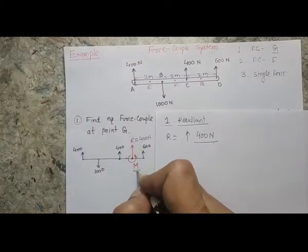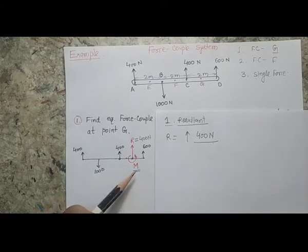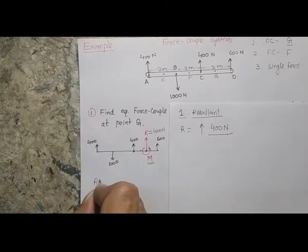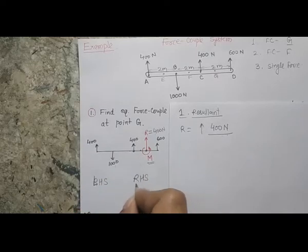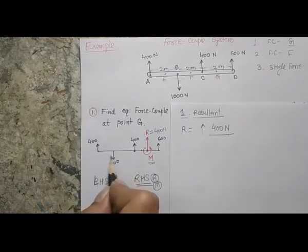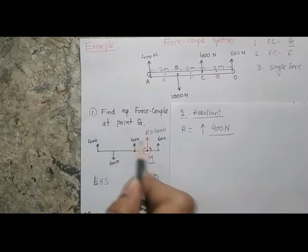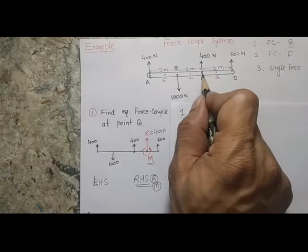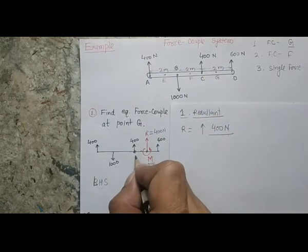Now I need to find the moment M. To do this, I write two equations — the left-hand side covering the effect of the original four forces, and the right-hand side covering the effect of the resultant force R and moment M. I am free to take the moment at any point; I'll choose point C.